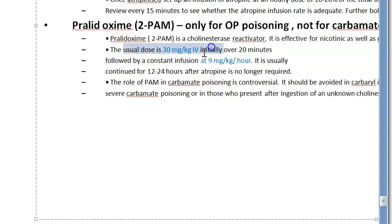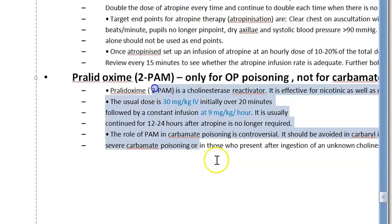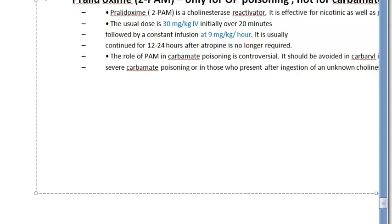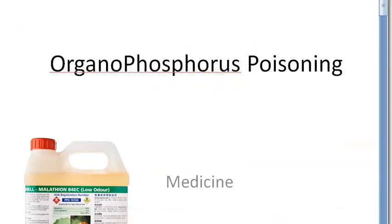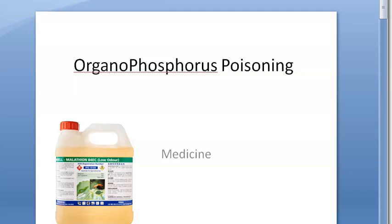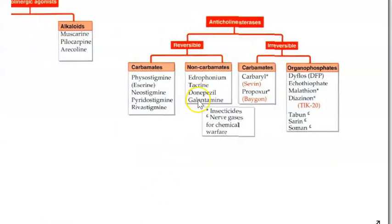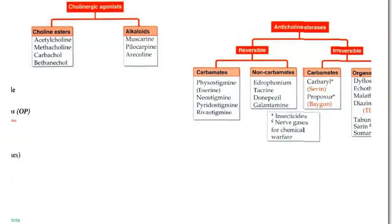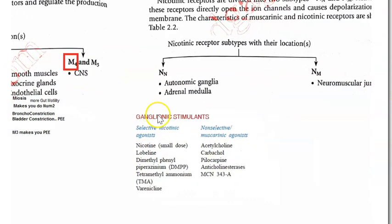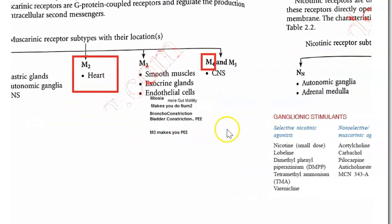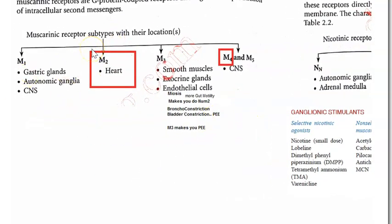After the loading dose of pralidoxime, give a constant infusion at 9mg/kg/hour. To summarize organophosphate poisoning: cover the classification, the receptors — muscarinic receptors M1 through M5 and nicotinic receptors — and note that atropine helps only with muscarinic symptoms. You should be able to write the effects of organophosphate poisoning and the antidotes with their doses.